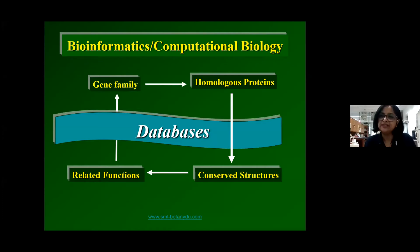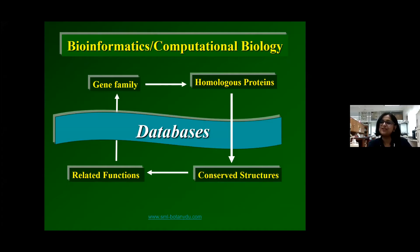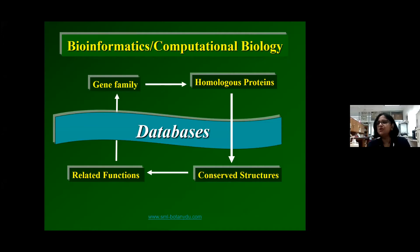If you're looking at a set of homologous proteins, you're probably looking at three-dimensional structures that are conserved. If you're looking at proteins with conserved structure, you're probably looking at related functions. And if you're looking at proteins with related functions, you may be looking at members of a gene family. The sequence databases enable you to look at this particular loop.